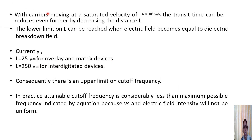With carriers moving at a saturated velocity of 6×10^6 cm/s, the transit time can be reduced by decreasing the emitter-collector distance l. The lower limit on l is reached when the electric field equals the dielectric breakdown field. Practically, l is chosen as 25 micrometers for overlay and matrix devices and 250 micrometers for interdigitated devices. In practice, the attainable cutoff frequency is considerably less than the maximum possible frequency indicated by the equation, because the saturated drift velocity Vs and electric field intensity will not be uniform.